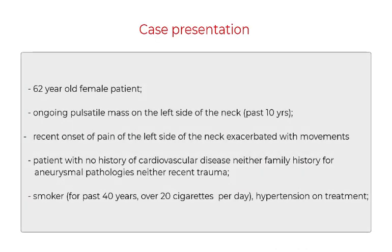This is a case of a 62-year-old female patient who presented with ongoing pulsatile mass on the left side of the neck for the past 10 years. Recent onset of pain on the left side of the neck exacerbated with movements was reported. Patient had no cardiovascular history, no family history for aneurysmal pathology or recent trauma. Patient was a smoker and hypertensive in treatment.